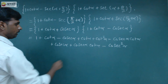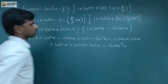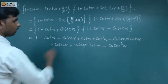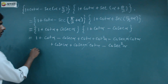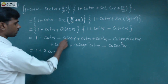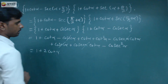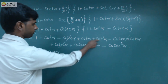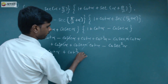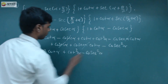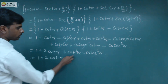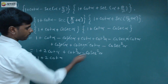So what terms cancel? Plus cosecant alpha times cot alpha and minus cosecant alpha times cot alpha cancel. Next, cot alpha plus cot alpha gives 2 cot alpha. Next, minus cosecant alpha plus cosecant alpha cancels. Next, cot squared alpha plus cot squared alpha minus cosecant squared alpha. So that's equal to 1 plus 2 cot alpha, then cot squared alpha minus cosecant squared alpha.